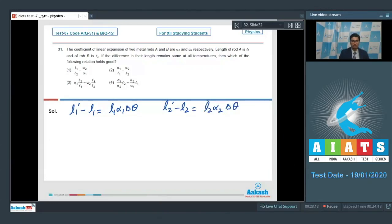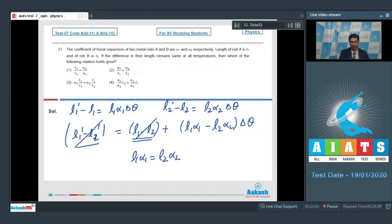On subtracting these two equations we can write that L1 dash minus L2 dash is equal to L1 minus L2 plus L1 alpha 1 minus L2 alpha 2 into delta theta. Because these two values are same they cancel out and we can see that L1 alpha 1 is equal to L2 alpha 2, that is L1 by L2 would be equal to alpha 2 by alpha 1, which makes option number 1 the correct answer.